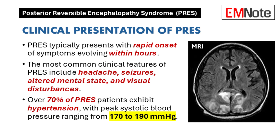More than 70% of patients diagnosed with PRES exhibit hypertension, although a significant number may not have markedly elevated blood pressure at the time of presentation. The peak systolic blood pressure in affected individuals often ranges between 170 and 190 millimeters of mercury.